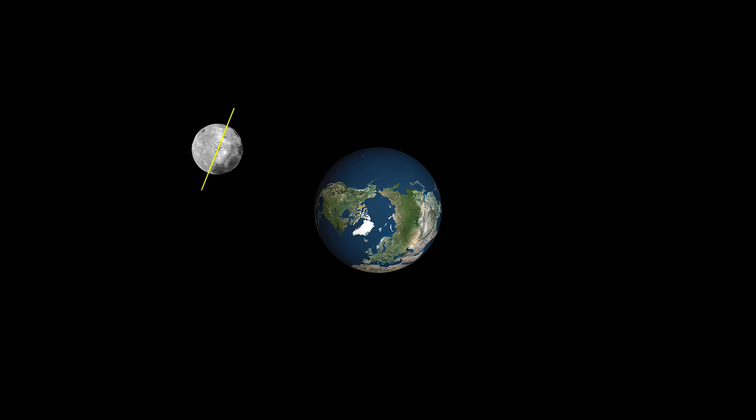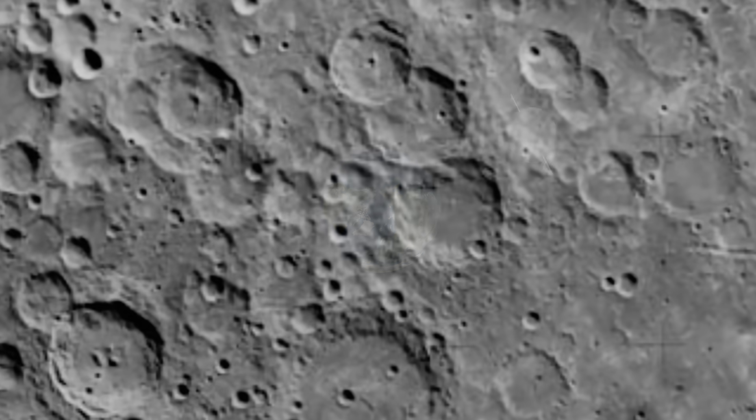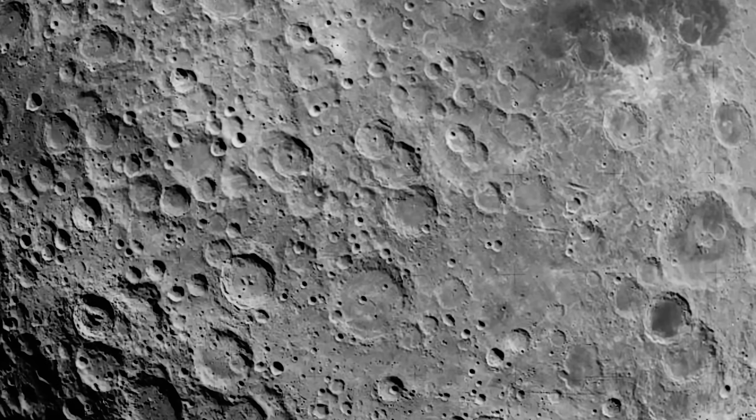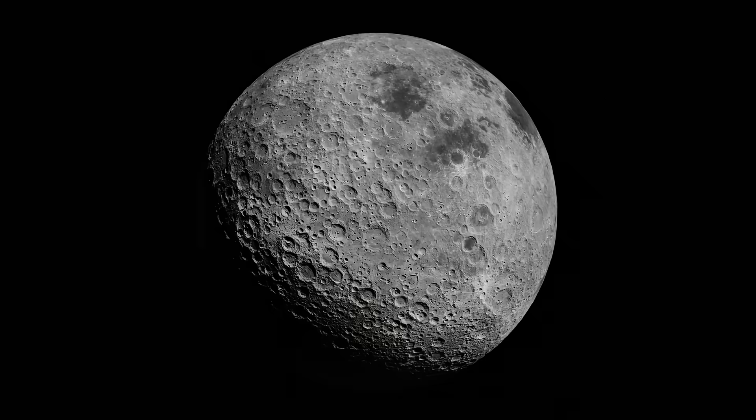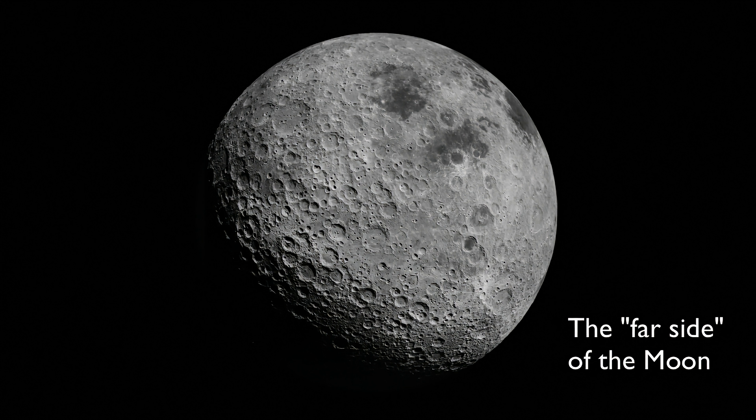The only side we ever see we call the near side. The side we don't ever see we call the far side. Actually, the first time we ever saw the far side was from photographs sent by a Russian lunar spacecraft in 1959. But no human ever saw the far side directly until the Apollo 8 mission in 1968.